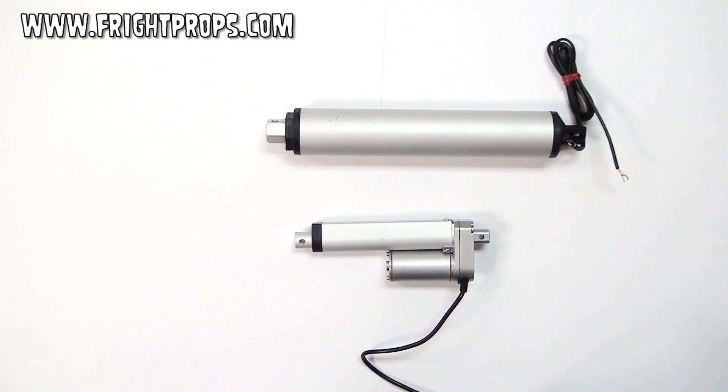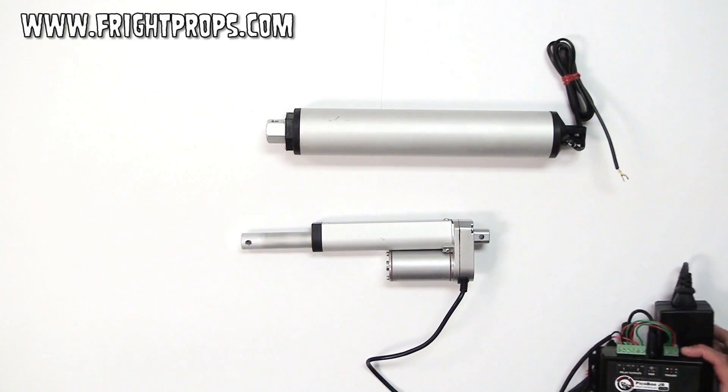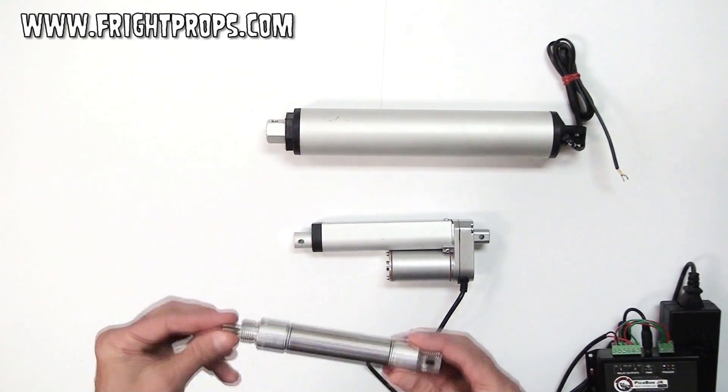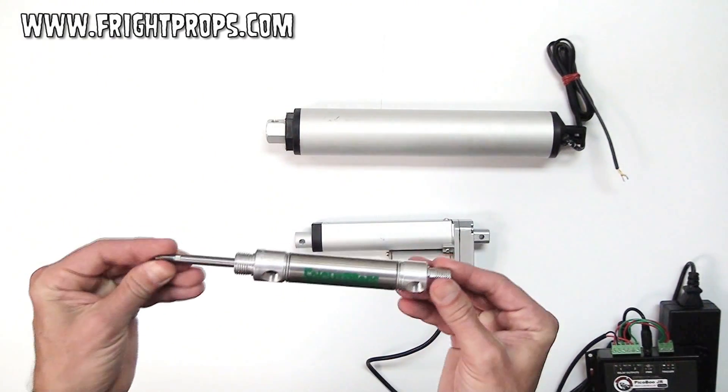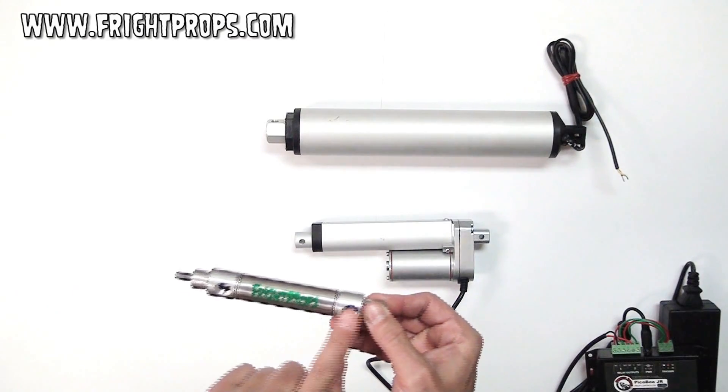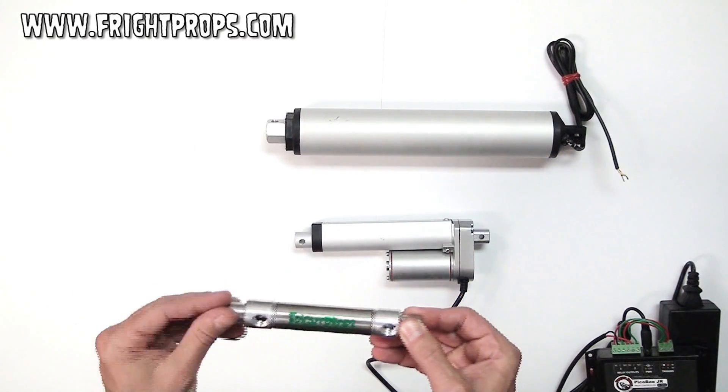They can be used to raise and lower items such as Halloween and special effects props. They're similar in action to a pneumatic or air-powered cylinder, whereas with a pneumatic cylinder, air pushes the shaft in and out by pushing air to one of the sides.